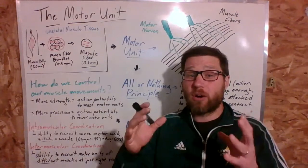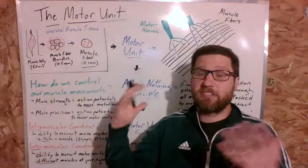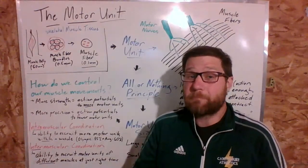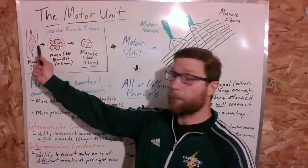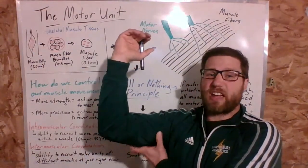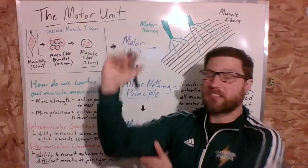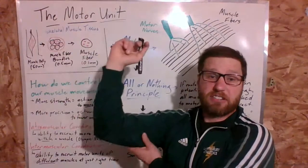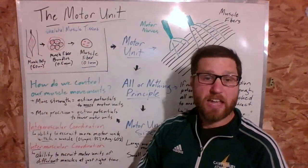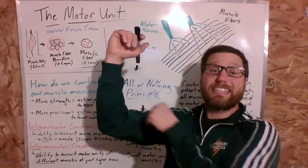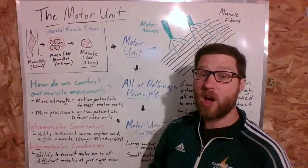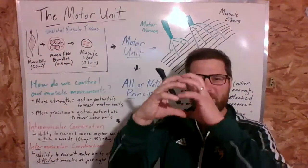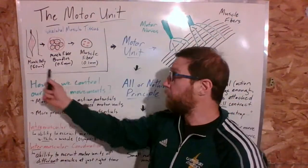We've talked about gross anatomy — your biceps, your triceps. But if we dig down into skeletal muscle tissue, it shows us a deeper type of anatomy. Here is the muscle belly — that part we think of as the muscle itself. Let's say we're talking about your triceps with a five centimeter, or 50 millimeter, diameter muscle belly. If I took a biopsy and looked deeper inside, we would see a number of muscle fiber bundles stacked on top of each other making up your muscle belly.